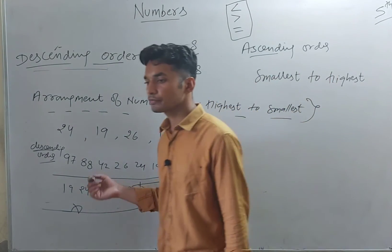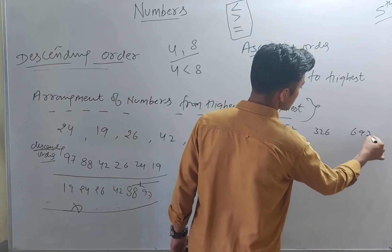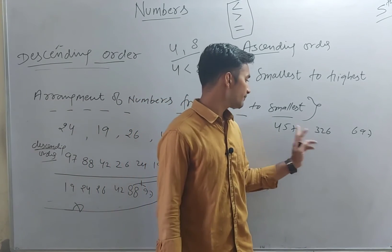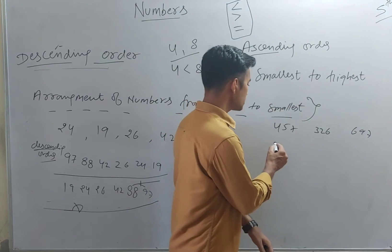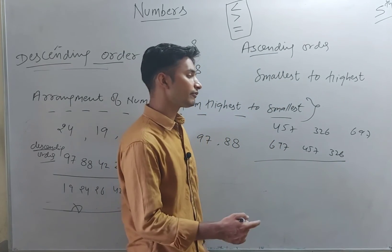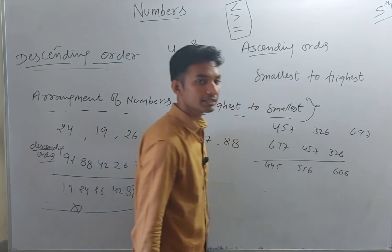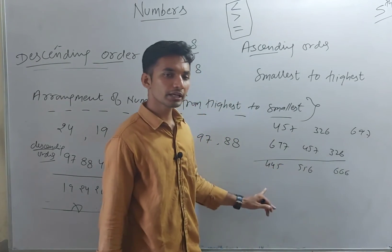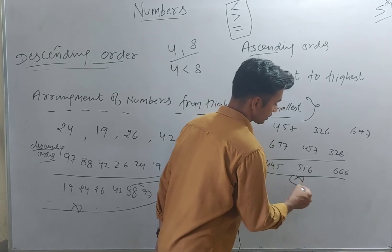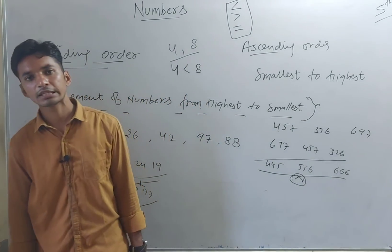For three-digit or four-digit numbers, we similarly do comparison. For example, with three-digit numbers like 457, 326, 697 — arrange in descending order by comparing the first digit: 4, 3, and 6. The highest first digit is 6, so 697 comes first, then 457, then 326. If the same digit appears, compare the next digit — for example 4, 5, 6 repeated: 6 is greater than 5, 5 is greater than 4. The ascending arrangement would be reversed for descending order.